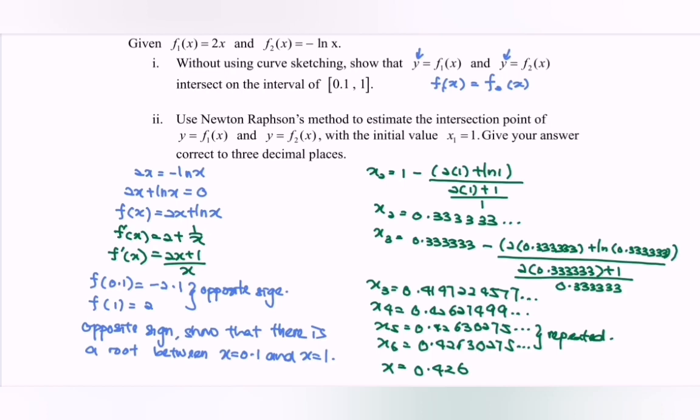The question asks for the intersection point. We have x = 0.426. Now substitute this value: f₁(0.426) = 2x = 0.853. So the intersection point is (0.426, 0.853), which is the intersection point between the two graphs.